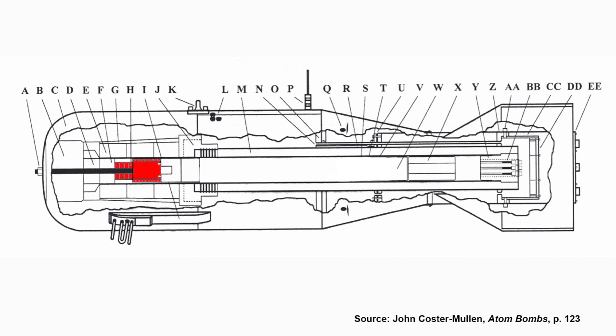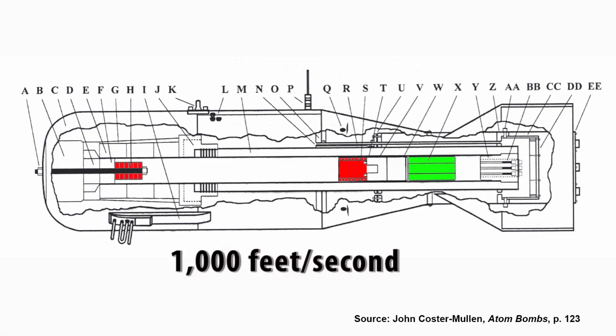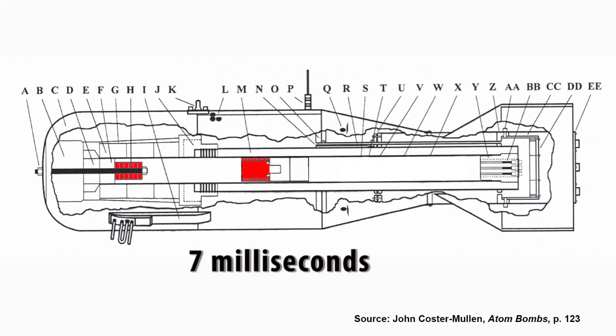Bear in mind, though, that this has to be done fast. That's why a gun was used to shoot the projectile at high speed into the target. The actual firing mechanism used cordite charges, which propelled the projectile down the barrel at just under 1,000 feet per second. It had to travel less than 6 feet, so it would have taken only about 7 milliseconds to reach the end of the gun barrel and mate with the target.